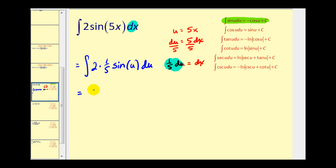Let's write this one more time. We're going to have (2/5) sin u du. Now we can apply the basic integral formula. We're going to have (2/5) times negative cosine u plus C.